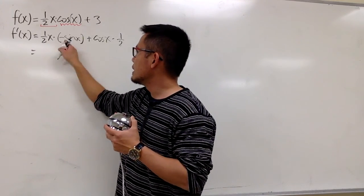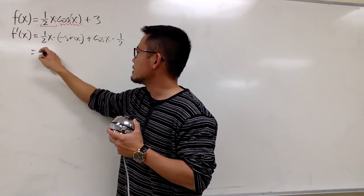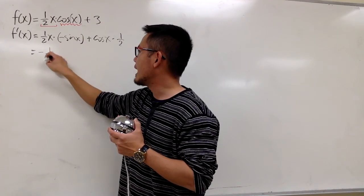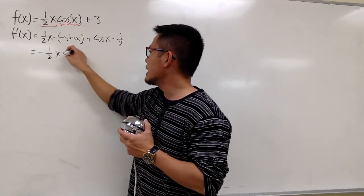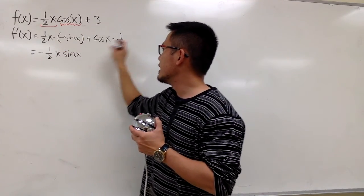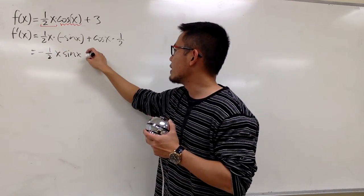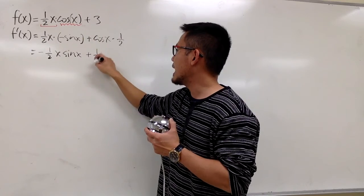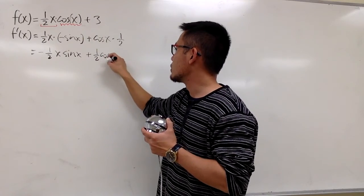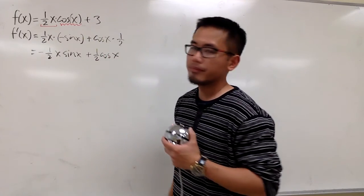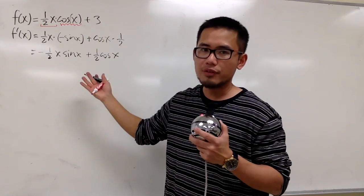Let me put a negative in the front, so we have negative ½x times sine x, and then plus ½ cosine x. That's the first derivative.